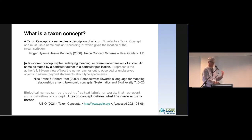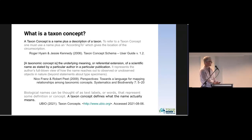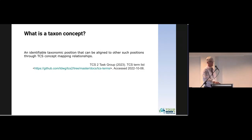Talking about the definition — the definition we spent most time on is: what is a taxon concept? There's actually no definition in TCS itself. The top definition comes from the TCS user guide: a taxon with a name plus description. The second comes from an important article by Nico Franz and Robert Peet that presented TCS to a taxonomic audience. The third is from the uBio website: a taxon concept defines what the name actually means — so taxon is about semantics.